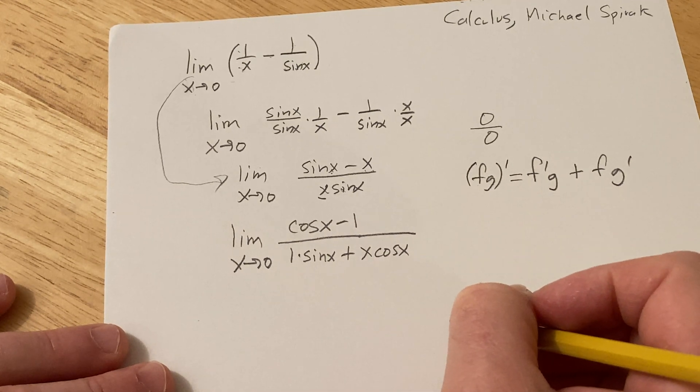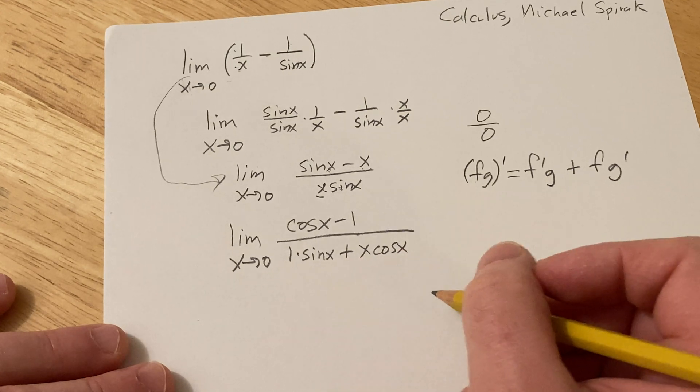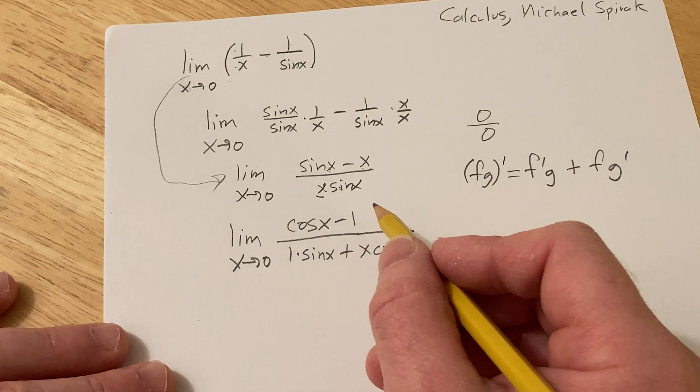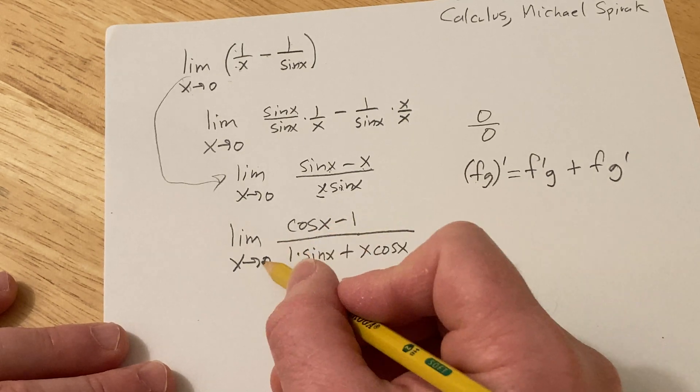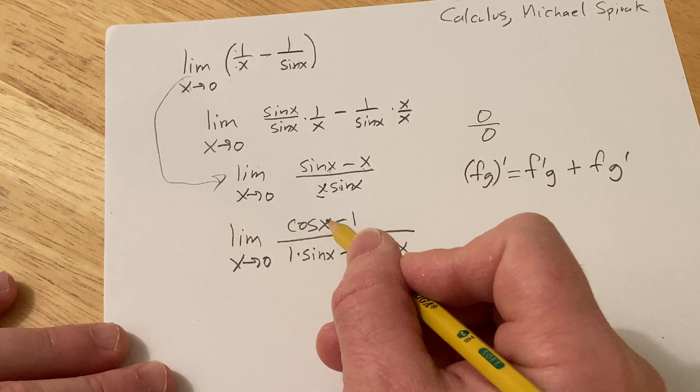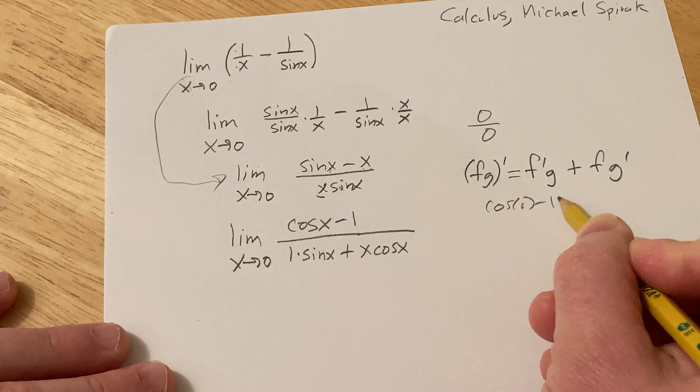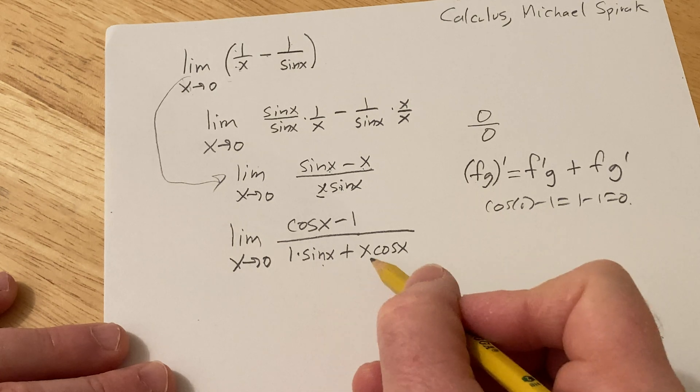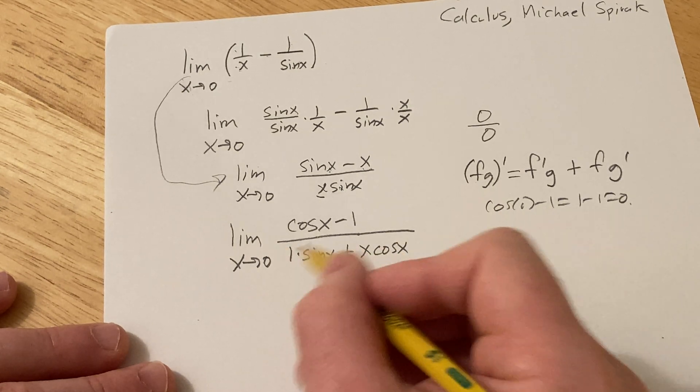All right, and let's see what happens here. Oh, it's still 0 over 0. I thought it would be done. Okay, so if you plug in 0, you get cosine of 0 minus 1, that's 1 minus 1, that's 0. And on the bottom it's clearly 0 because sine of 0 is 0 and here x is 0, so 0 over 0.